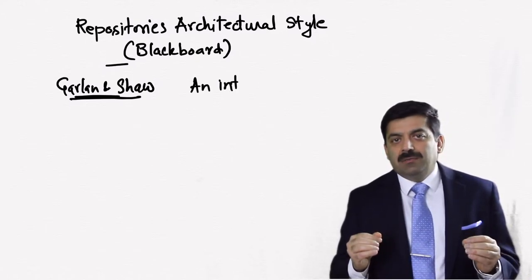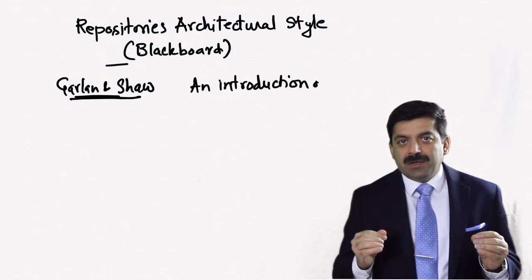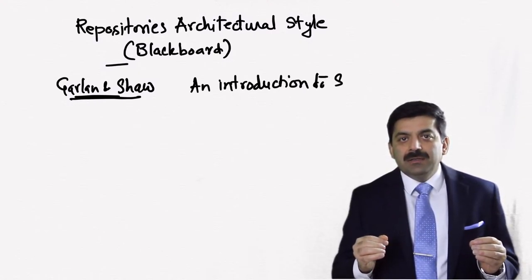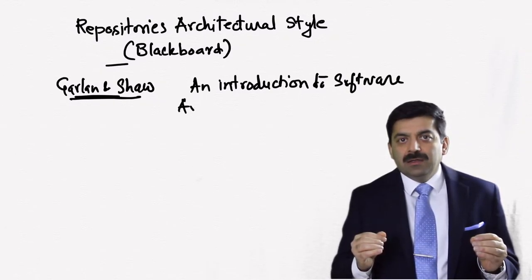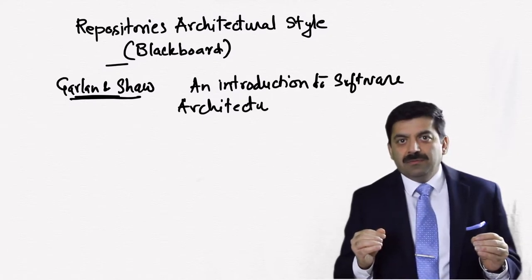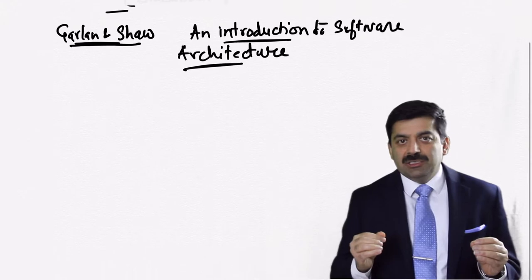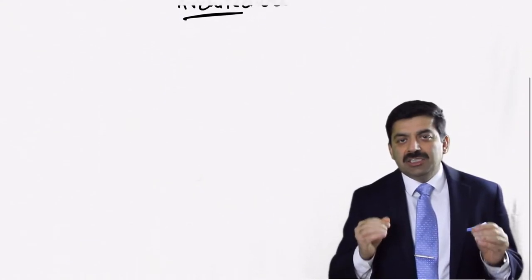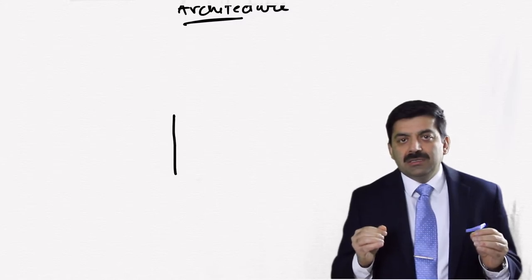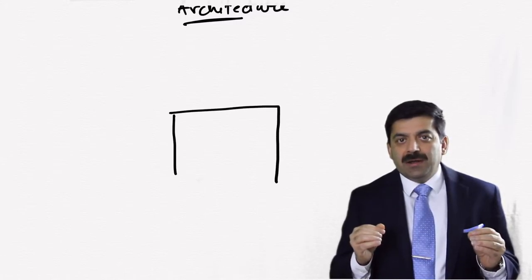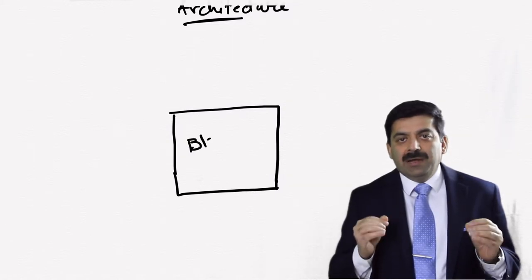So let's discuss what blackboard repository architecture style is. In blackboard architecture style there are two main data structures. One is called blackboard structure. It has shared data which is generally organized in hierarchical structure required by the application.